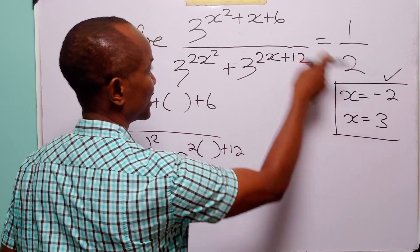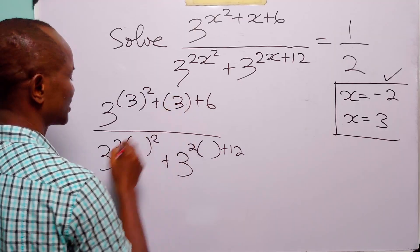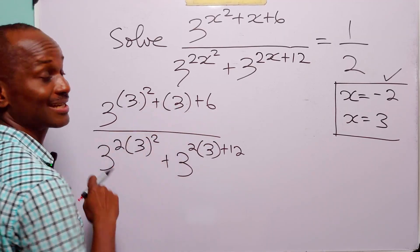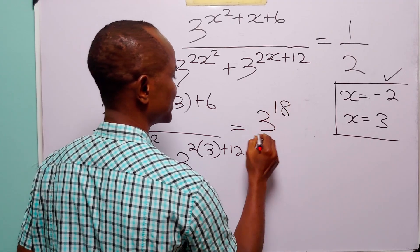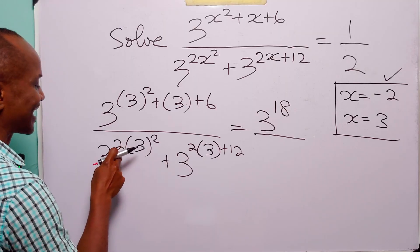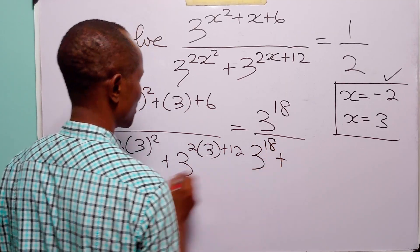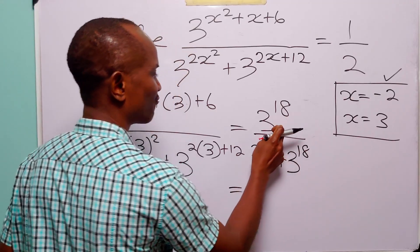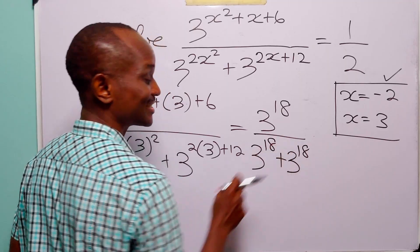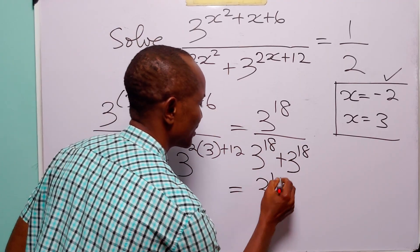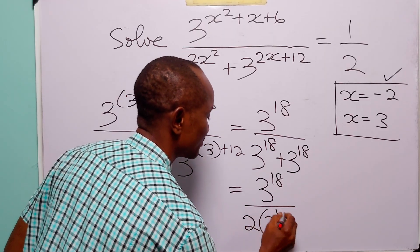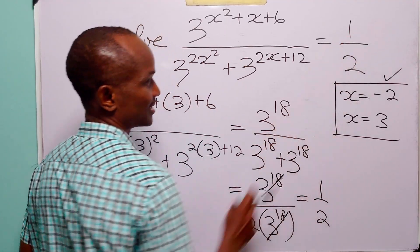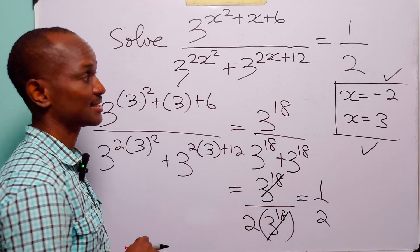When we substitute x equals 3 into the original equation, 3 squared is 9 and 3 plus 6 is 9, so 9 plus 9 is 18. The numerator is 3 to the power 18. In the denominator, 9 times 2 is 18 and 2 times 3 plus 12 is 18, giving 2 times 3 to the power 18. So this simplifies to 1 over 2, which is exactly the right-hand side. The second value of x also satisfies this equation.